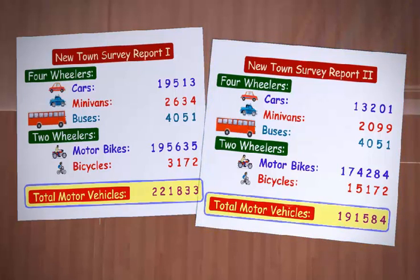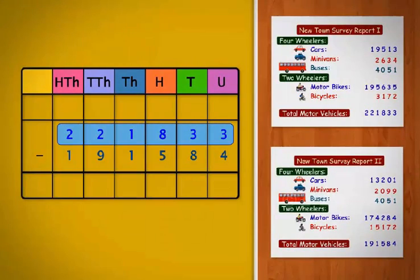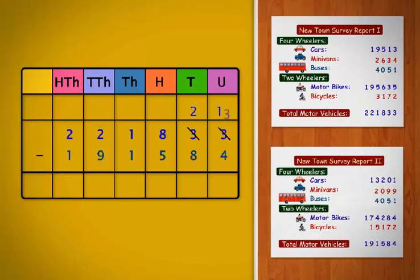If we compare the figures with the old report, we can definitely say that the number of motor vehicles has reduced. But, by how many? We always begin by subtracting the digits in the units column. Here, 3 is less than 4, hence we need to borrow from the tens column. Borrowing 1, 10 leaves 2 in the tens column. The borrowed 10 gets regrouped to 10 units. So, now there are 10 plus 3 equals 13 units. 13 minus 4 equals 9.